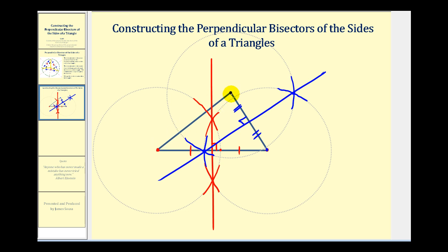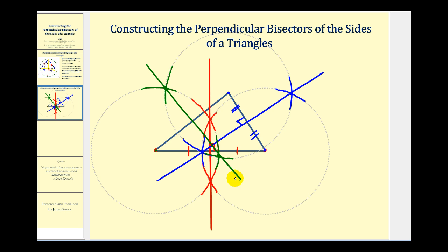Now we have one more side to bisect. We'll put the point of the compass here and swing an arc to the left and right of this side, again with the same radius. Then we'll move the point of the compass to the other vertex and swing an arc to the left and to the right. This last perpendicular bisector passes through these two intersection points. We have a right angle here and two congruent segments. My construction is a little bit off, but you can see that the perpendicular bisectors should intersect here at the circumcenter. We could construct a circle with the center here that would pass through the three vertices of the triangle.